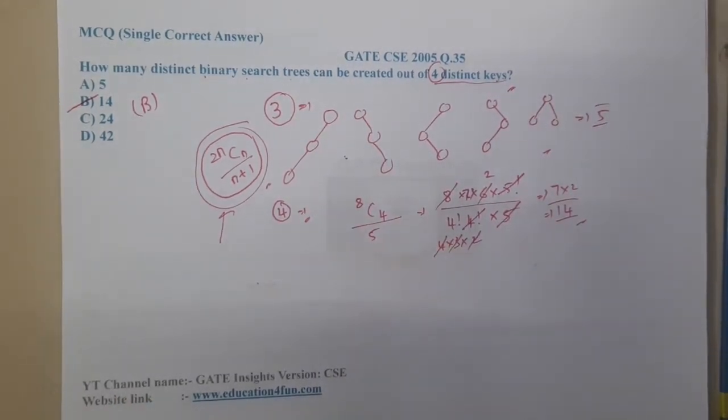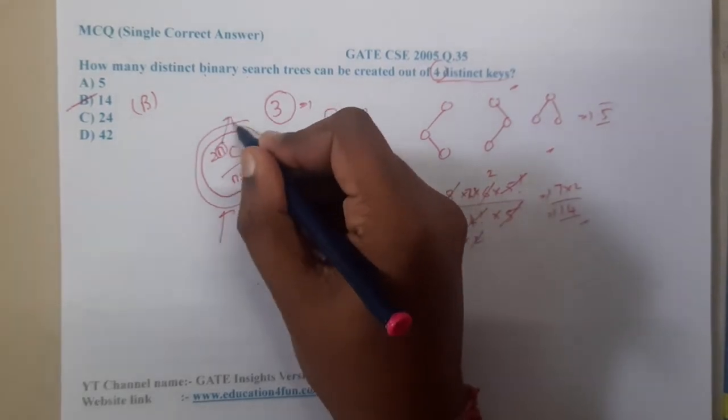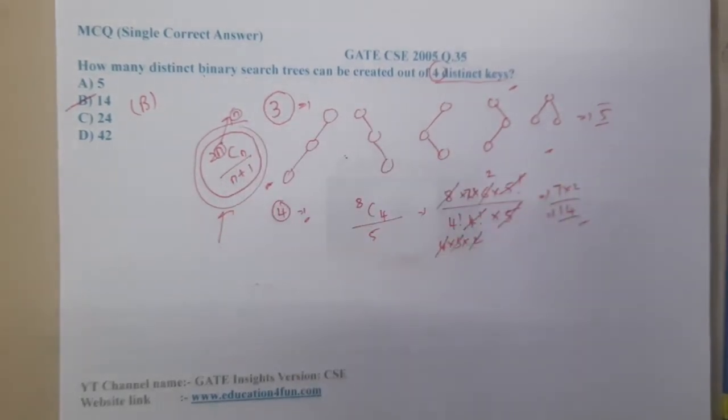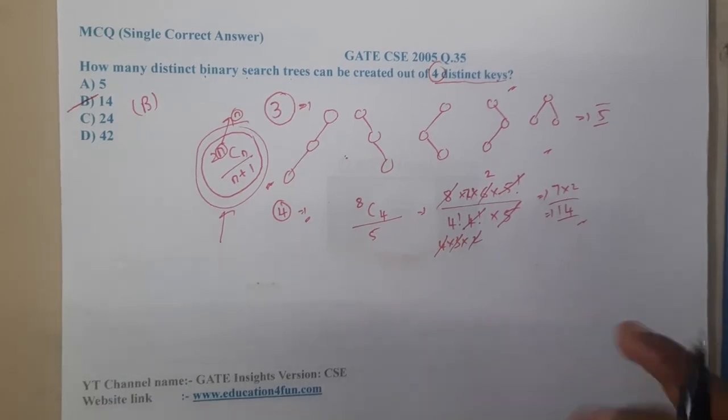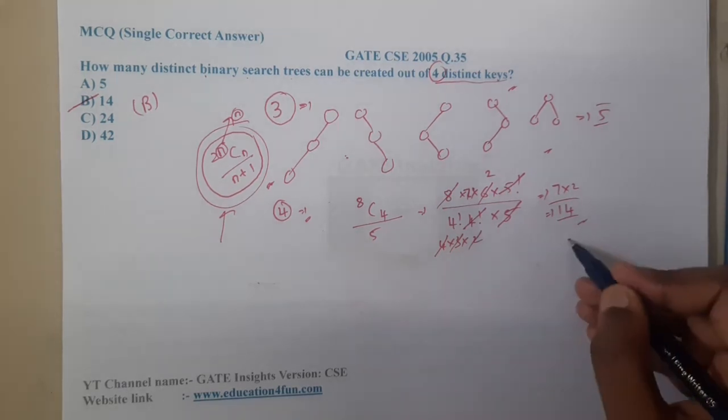That is the reason why remember the formula. I also remembered that formula and now I remember it. So 2nCn by n plus 1. Whenever n is the number of nodes, this will result in the number of unique binary trees or distinct binary search trees. Remember that also, it's not binary tree, it's binary search tree.